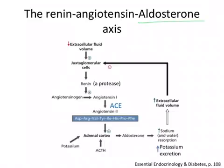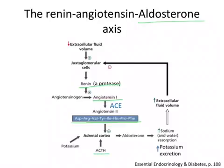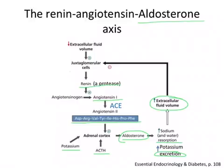Aldosterone is another important corticosteroid, secreted in response to decreased fluid volume levels. The kidney juxtaglomerular cells start off the process by secreting the protease renin, which cleaves angiotensinogen to angiotensin 1. The enzyme angiotensin-converting enzyme, or ACE, cleaves angiotensin 1 to angiotensin 2. Angiotensin 2, together with ACTH and increased potassium levels, stimulate the adrenal cortex to synthesize and secrete aldosterone. The aldosterone then works on the kidney to increase sodium and water resorption and to increase the excretion of potassium, which increases extracellular fluid volume and feedback inhibits the juxtaglomerular cells.